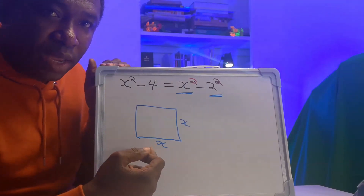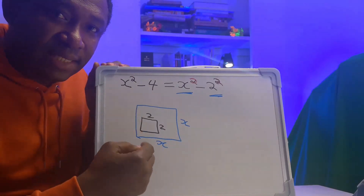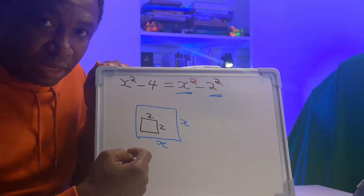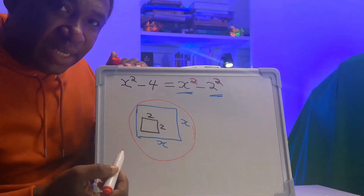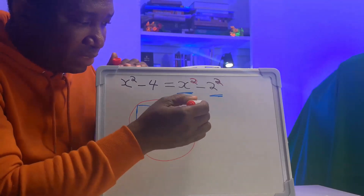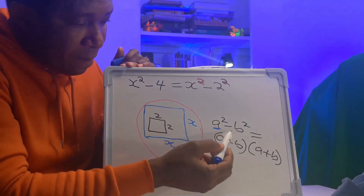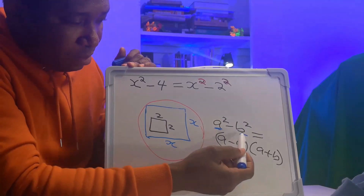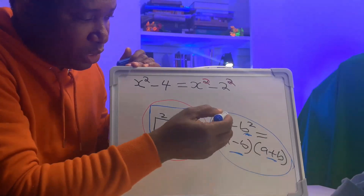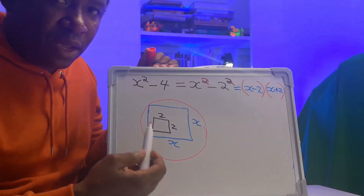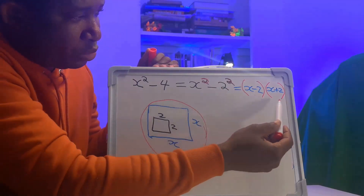Difference of two squares means a perfect square is subtracting another perfect square. You have a square of length x and width x, and inside that square you have another perfect square of length 2 and width 2. We apply the rule a squared minus b squared equals (a minus b)(a plus b), giving us (x minus 2) in brackets times (x plus 2) in brackets.